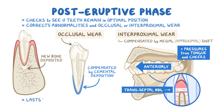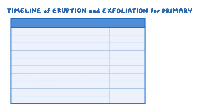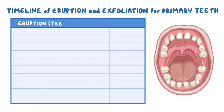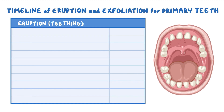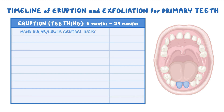The post-eruptive phase continues as long as the tooth remains in the oral cavity. Although most teeth have a similar mechanism of eruption, they vary in their eruption and exfoliation times. The eruption of primary teeth is commonly known as teething, and it usually begins at around 6 months of age and goes on until about 24 months of age. The first to come are the mandibular lower central incisors, which erupt at around 6 to 10 months of age.